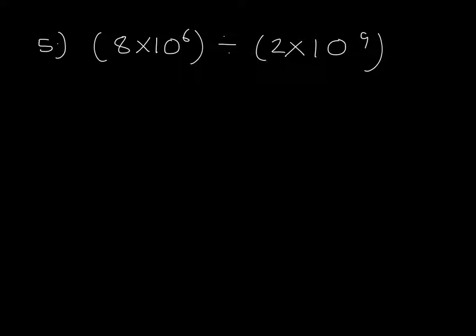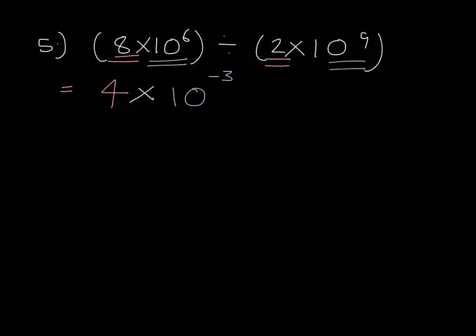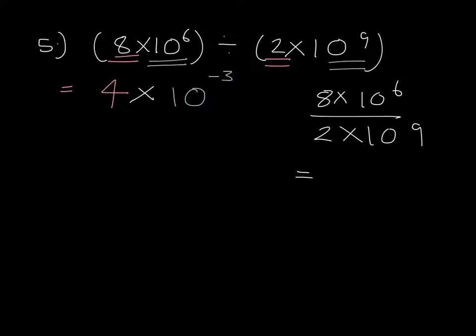Question 5: notice that this is a division question. We start off by doing 8 divided by 2, which gives us 4. We then do 10 to the power of 6 divided by 10 to the power of 9 — we subtract the powers — which gives us 10 to the power of minus 3. The answer is in standard form, so it's 4 times 10 to the minus 3. Another way of seeing this is writing 8 × 10⁶ over 2 × 10⁹: 8 divided by 2 gives 4, and dividing the powers gives 10 to the minus 3.